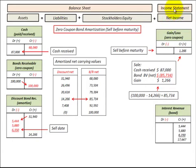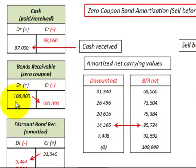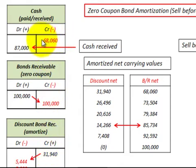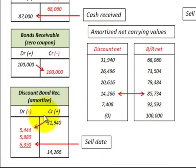We have a $100,000 face value bond that we purchase with a maturity five years into the future, and we pay $68,060 for that bond. We need a balancing entry between the cash account and the bonds receivable account, which we call a discount to bonds receivable. This is a contra account that reduces the bonds receivable account, so we have a balancing entry of $31,940. That $31,940 plus the $68,060 cash paid balances with the bonds receivable of $100,000. We use the discount to bonds receivable to amortize the interest revenue we recognize each period.